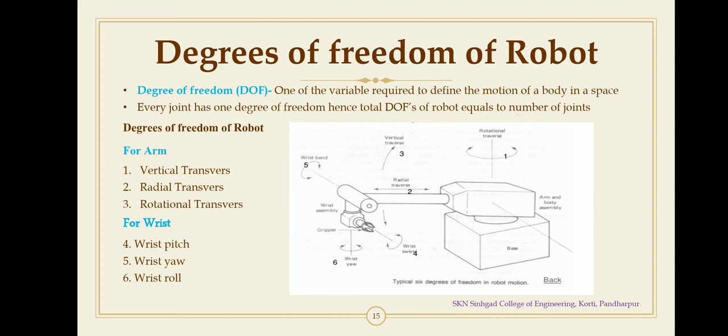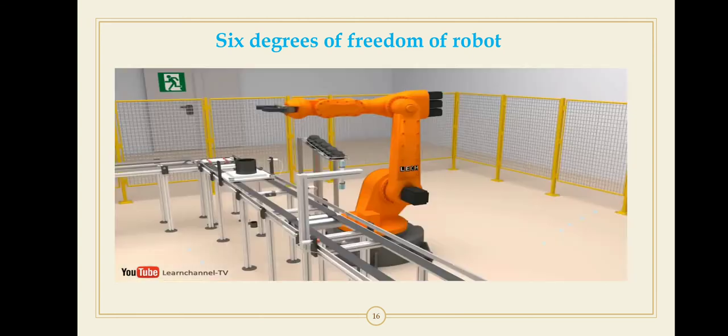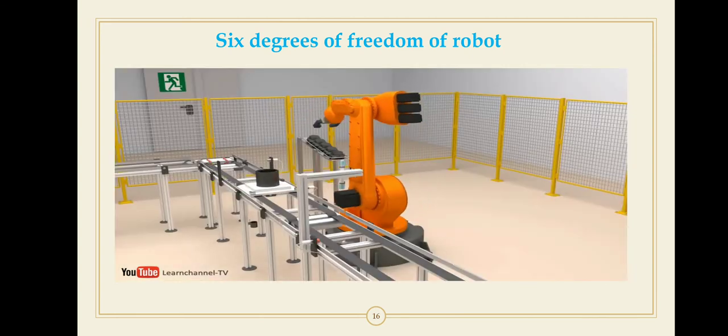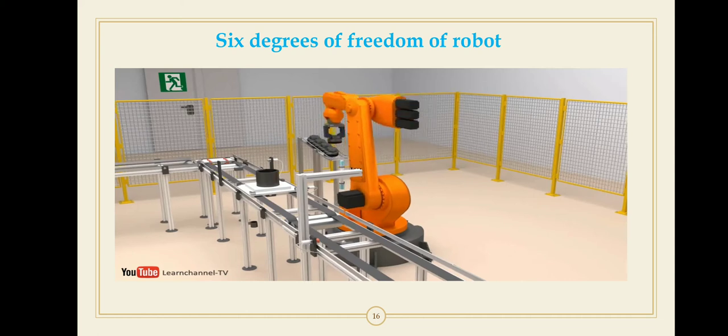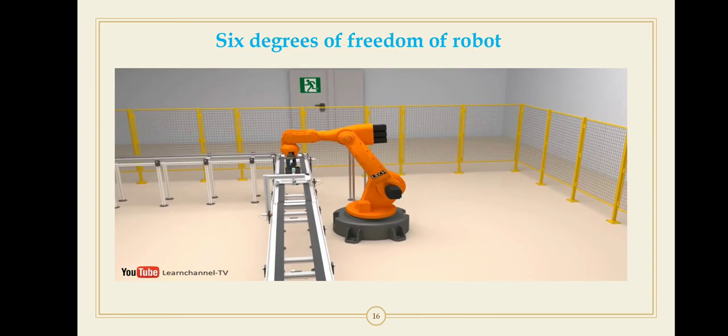This video shows six degrees of freedom of the robot. The universal robot, also named 6R robot due to its axes, is the most used industrial robot because of its high flexibility. A reason for us to have a closer look at its kinematics.